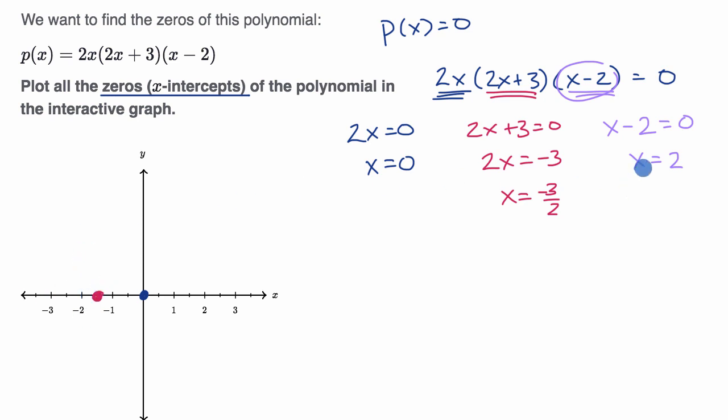And then we have x equals two, which is right over there. So those are the x-intercepts or the zeros of that polynomial.